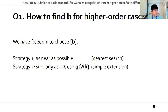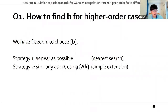We can come up with two options. The first strategy is nearest search: we search from the origin to the farther region with increasing distance from K to find the nearest B vectors. The second strategy is simple extension: we first find the first-order finite difference B vectors and multiply by 2, 3, or N. So we use B, 2B, 3B, or NB with modified weights.